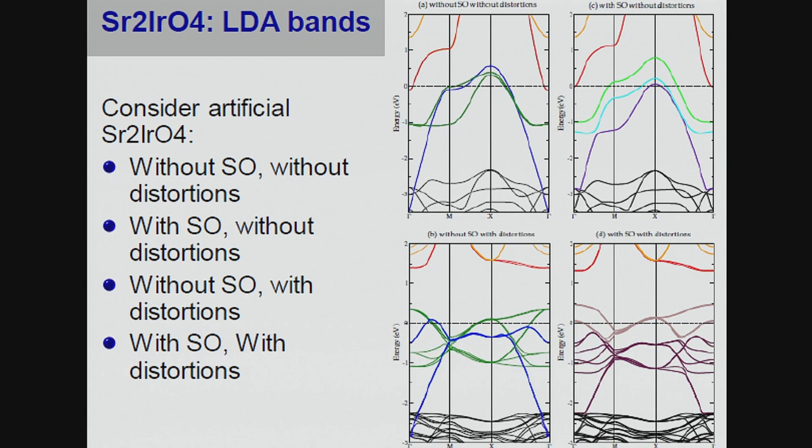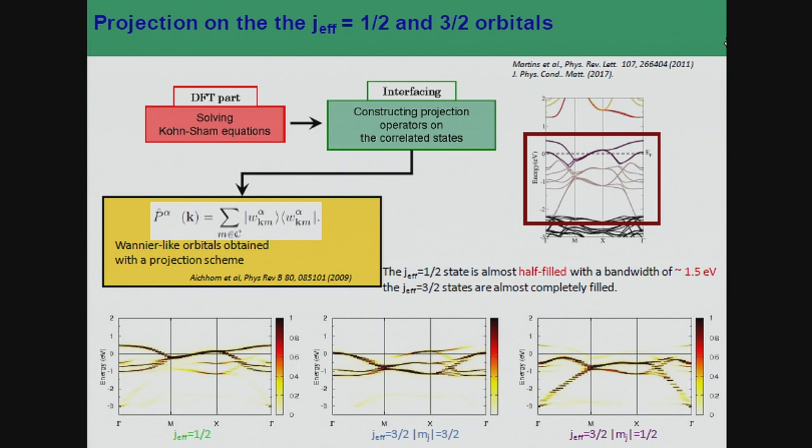As a theoretician, I can switch off things selectively. Let me undo the distortions and undo the spin-orbit coupling — then I just have a band structure very similar to strontium ruthenate. I can selectively switch on either spin-orbit or distortions or both. You see how the back-folding of bands comes in from the distortions, and some rearrangements from the spin-orbit coupling.